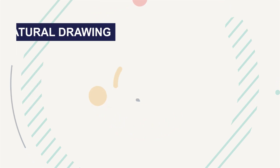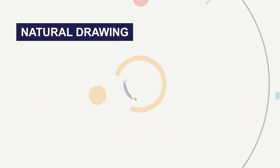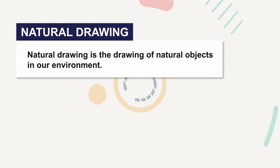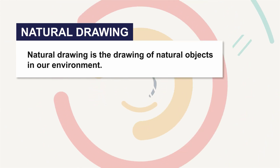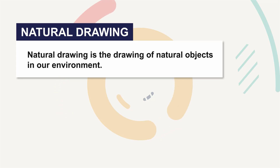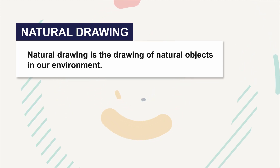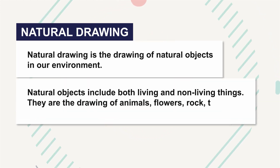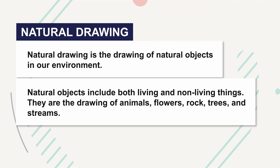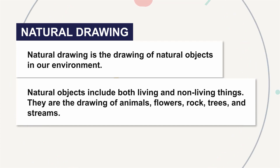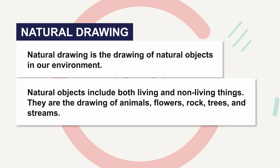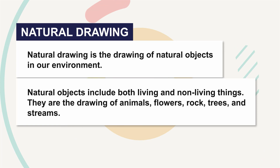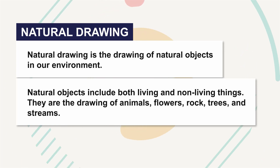Now, natural drawing. Natural drawing is drawing of things in our environment that are not man-made objects. Natural objects include both living and non-living things. They are the drawing of animals, flowers, rock, trees, and springs.